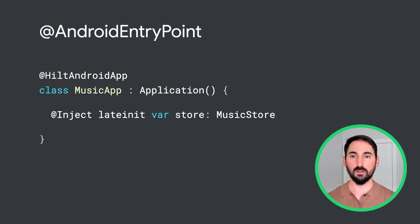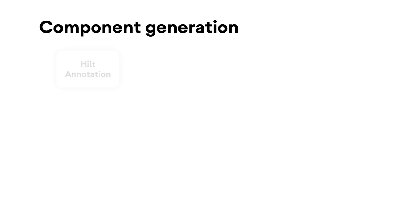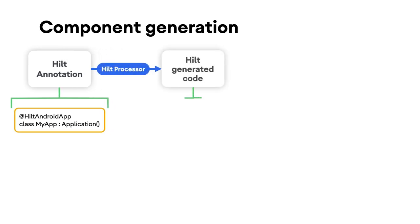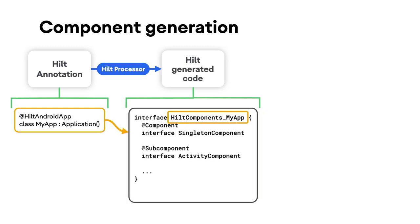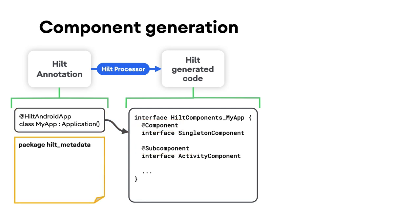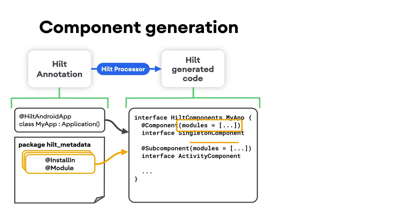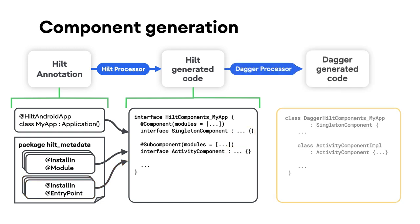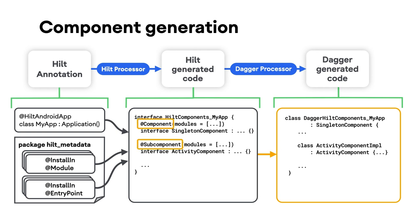Let's take a look at how the components are generated. A user just needs to annotate their application class with HiltAndroidApp. The Hilt annotation processor then generates a set of components inside of a wrapper class that has the same name as the application class prefixed with HiltComponents_. These components are the @Component and @Subcomponent annotated classes that you normally would write by hand if using Dagger. Hilt then looks in the metadata package to find all of the @InstallIn annotated classes. The @InstallIn modules are placed in the modules list of the corresponding component declaration, and the @InstallIn entry points are placed as supertypes of the corresponding component declaration. From here, the Dagger processor takes over and generates the component implementation. Hilt hides this complexity from the user.